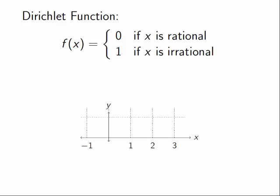So let's try to imagine what this function looks like. All the whole numbers, 1, 2, 3, these are rational, so the function is 0 there. Also, 1.1, 1.2, 1.3, all these numbers map to 0.